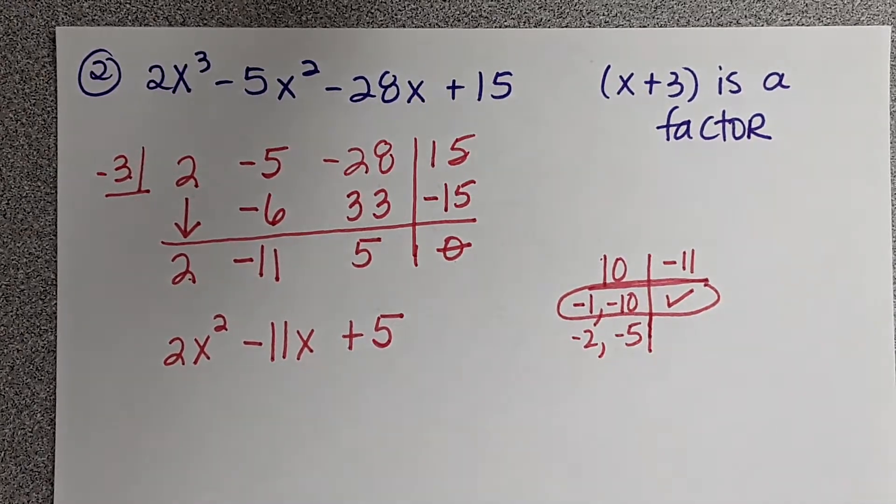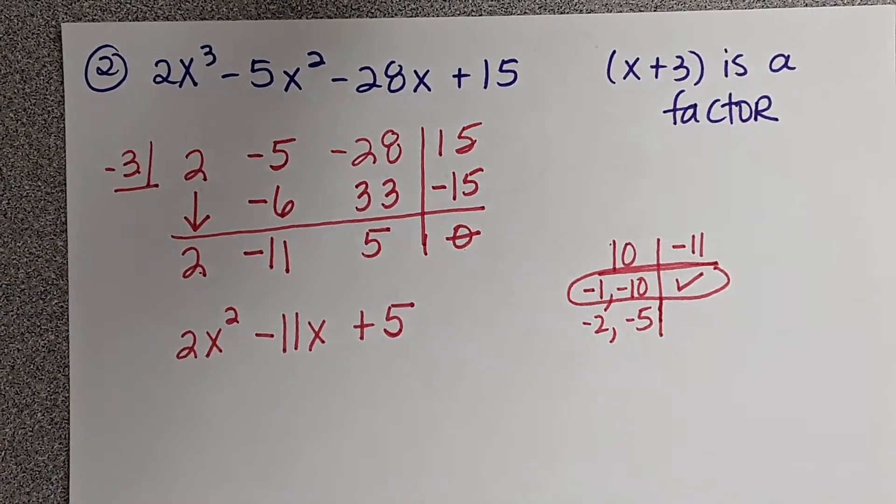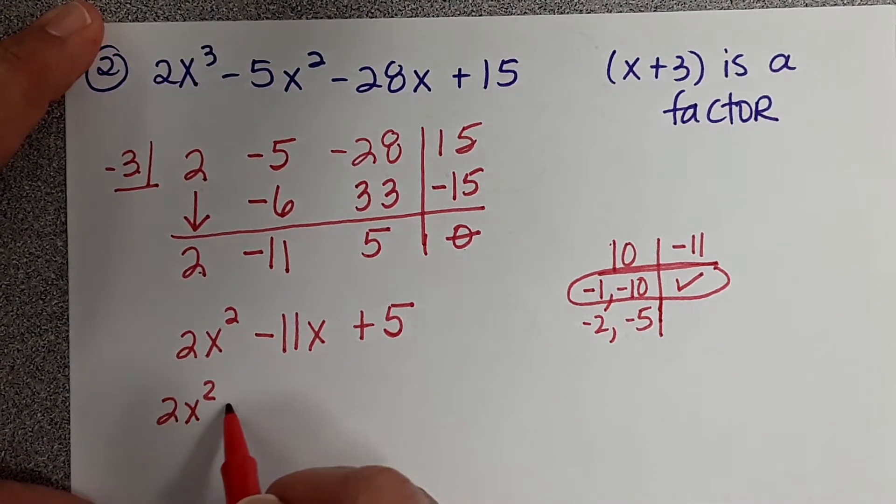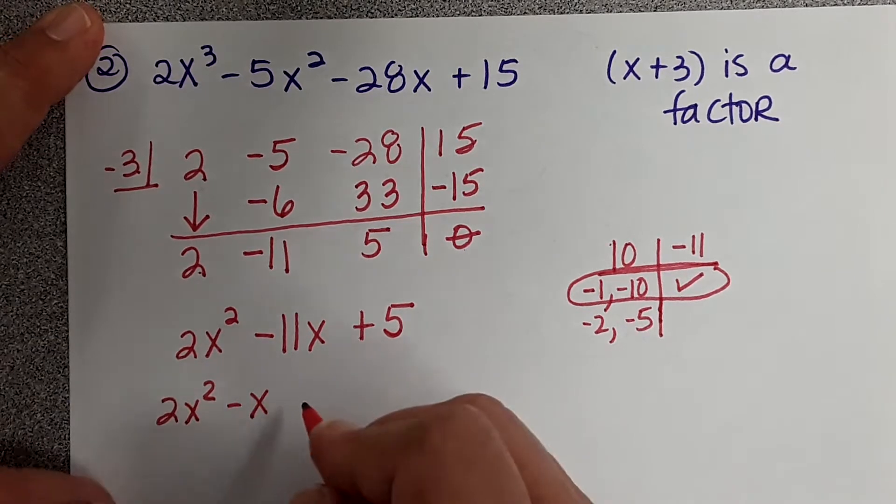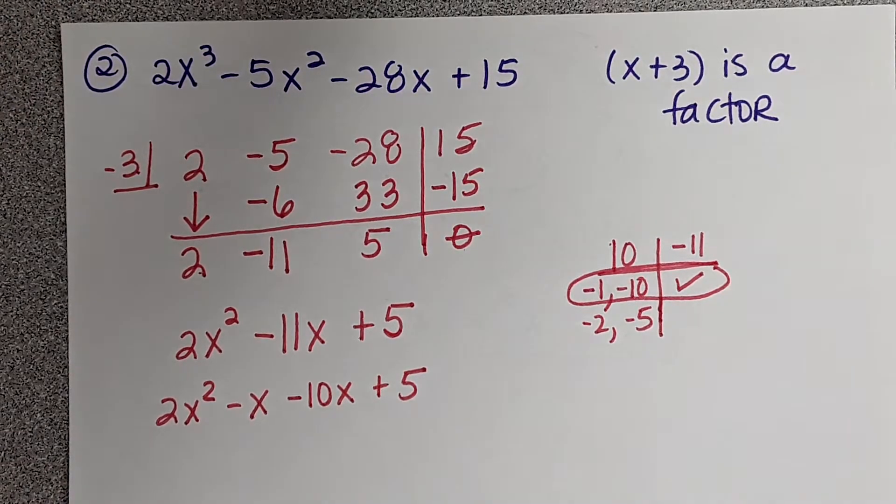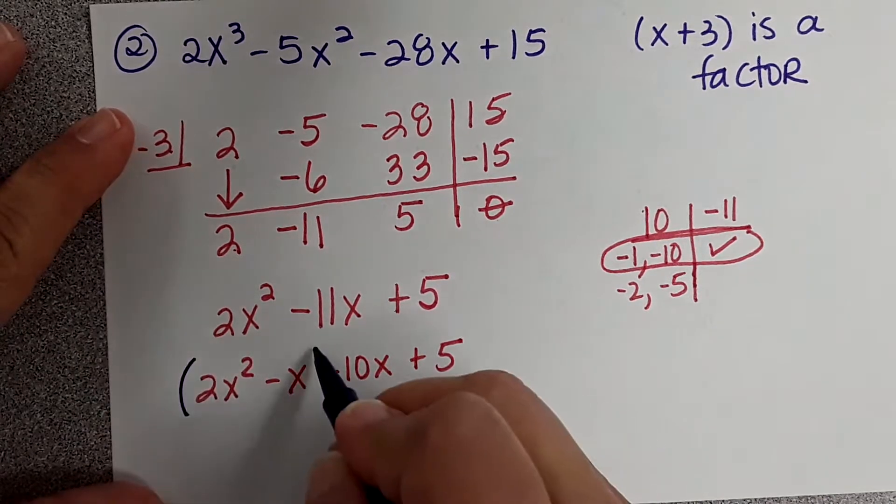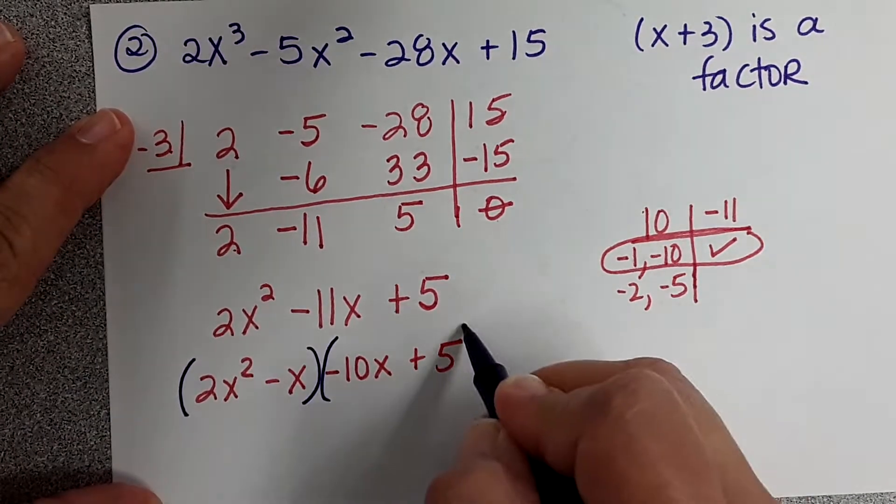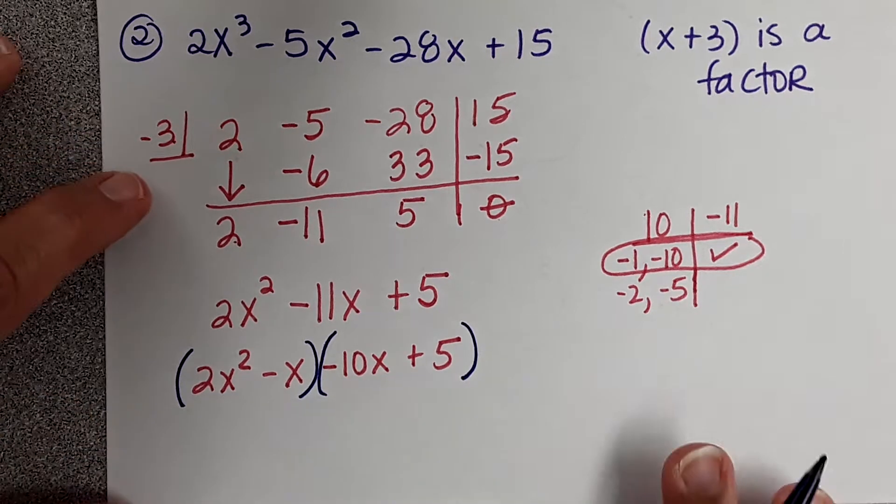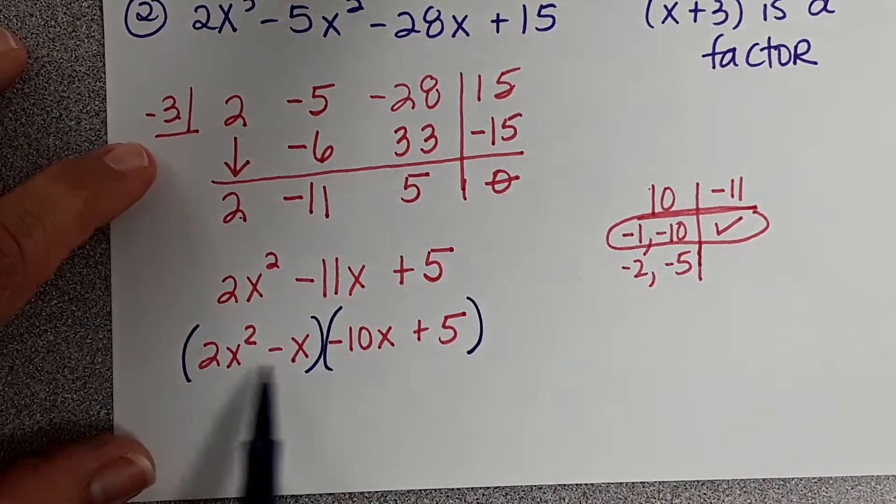Because A is not 1, you guys, we're going to factor by grouping. So this goes back to our chapter 4. So 2x squared minus x minus 10x plus 5. Now remember what I said, factor by grouping. Parentheses around these two, parentheses around these two. This is a really good one before problem number 3, because problem number 3 you have to factor by grouping.